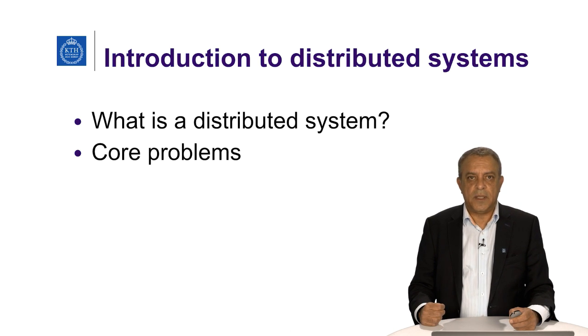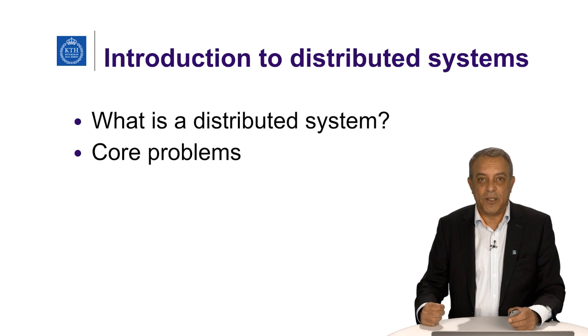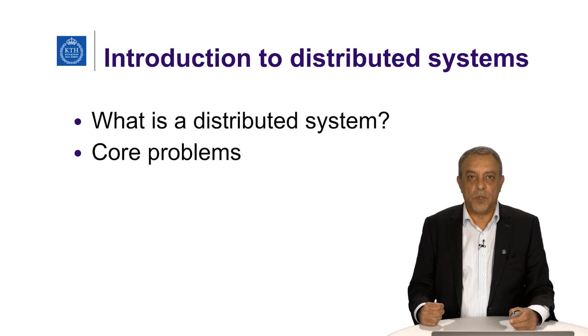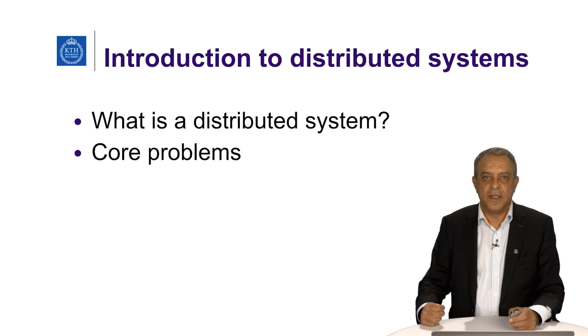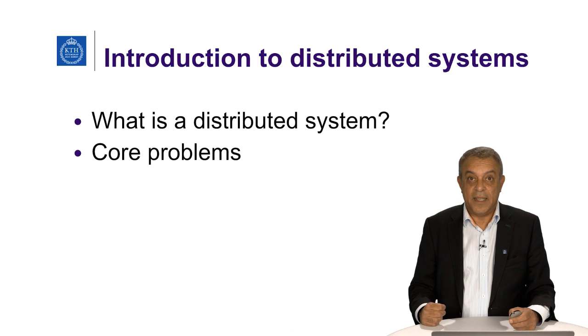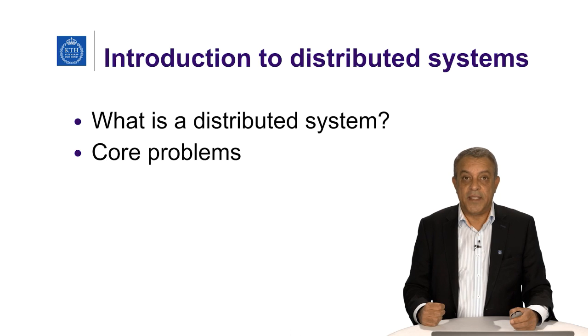It turns out that the two general problem is not solvable if you allow messengers between the two camps to be killed on their way. The consensus problem is solvable in some distributed system models, but impossible to solve in some other models. Consensus is the basis for building reliable distributed systems. That's why it is important.